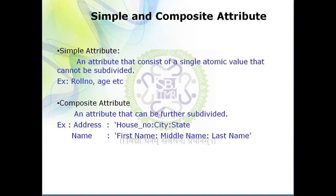Opposite to simple attribute is composite attribute. A composite attribute is one that can be further subdivided into parts. For example, address is a composite attribute because it can be subdivided into house number, city, state, area, and so on. Another example is name, which can be subdivided into first name, middle name, and last name.